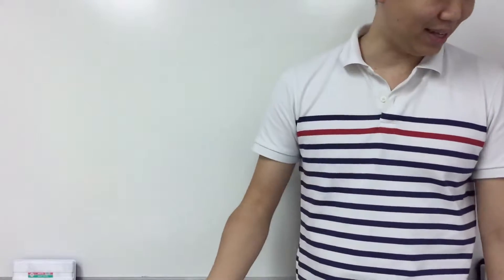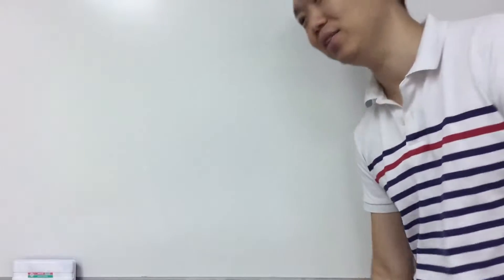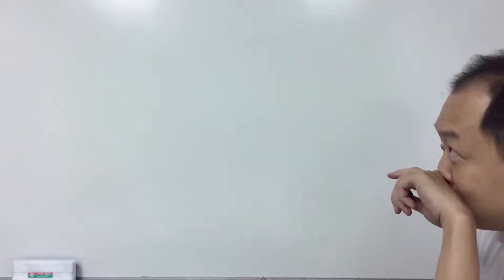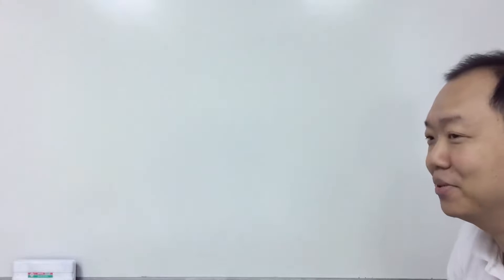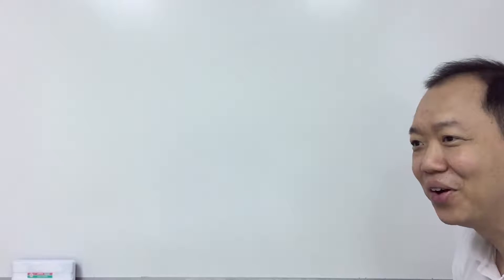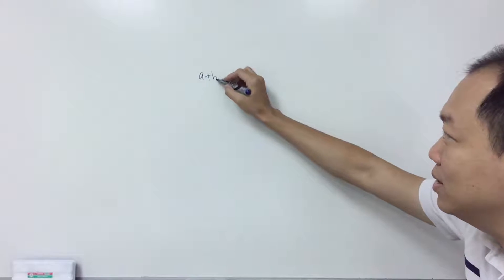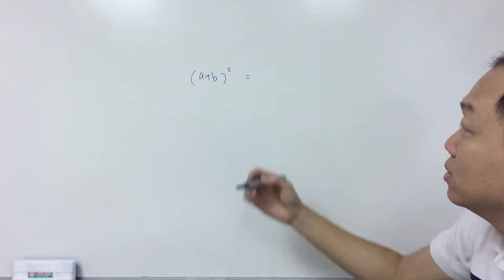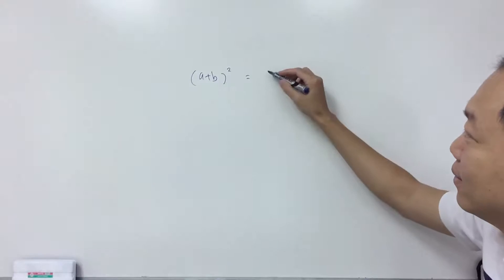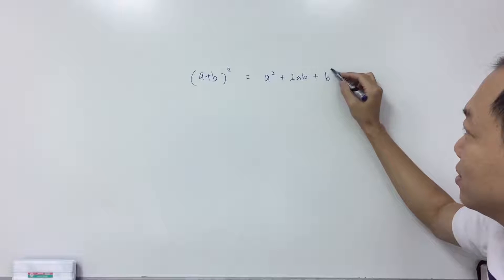Because yesterday what I did was I only tested one direction. I didn't test the other direction. There are two directions that we need to be very good at. Since there are three of you here, each one tell me. Can you tell me the first one? A plus B, bracket square, equals A squared plus 2AB plus B squared.